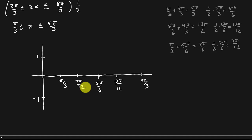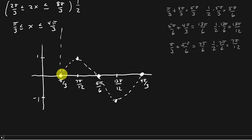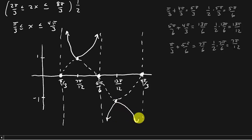Draw in the vertical asymptotes where sine equals 0, then sketch in the cosecant function. There's your graph. You can do more than one period if needed — just add another period onto it.